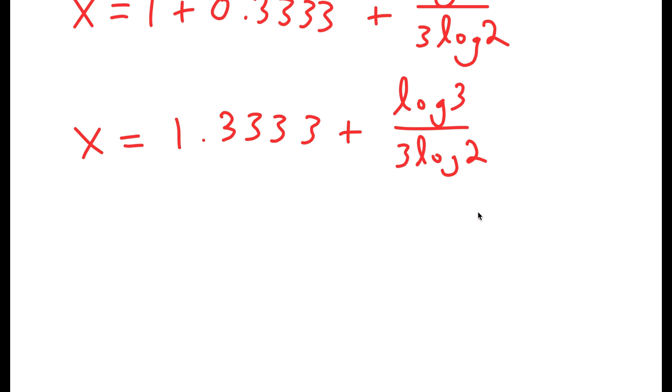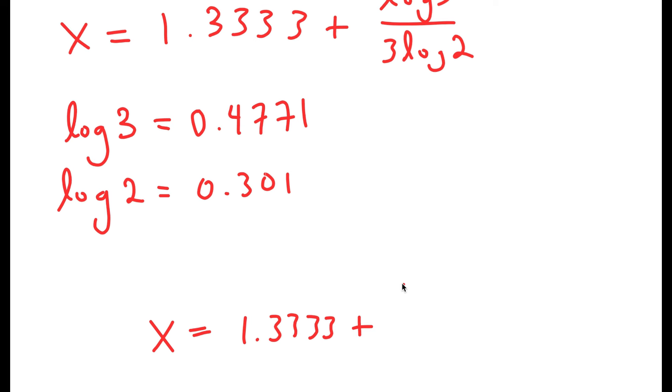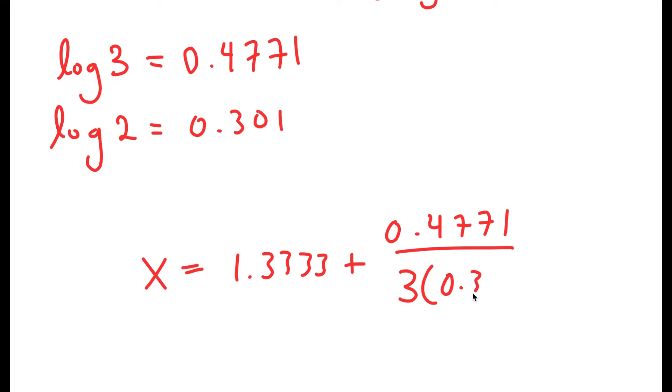Now all that's left is, because this is fully simplified, all I need to do is plug in the exact values of log 3 and log 2. And this I can do using a calculator, because most people don't have their logarithms memorized. So log 3 is equal to 0.4771.